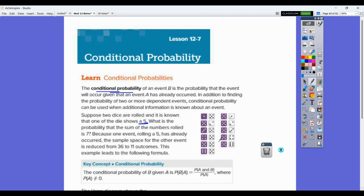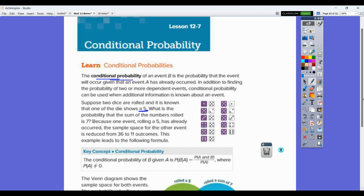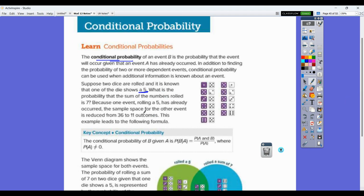So this example leads to the following formula. The probability of B given A is P(A and B) over P(A). So you look at what A is, and I always work from the bottom up on these. You look at the events in A. So there's 11 of those outcomes down there. And then the probability of A and B, so of these, which of these have that sum of 7? So we have the 5s and the 2s. So 2 of those have that sum of 7, and you'd get 2 out of 11 there.